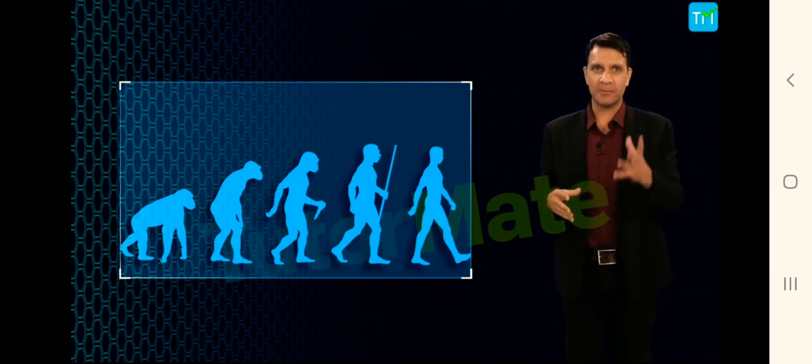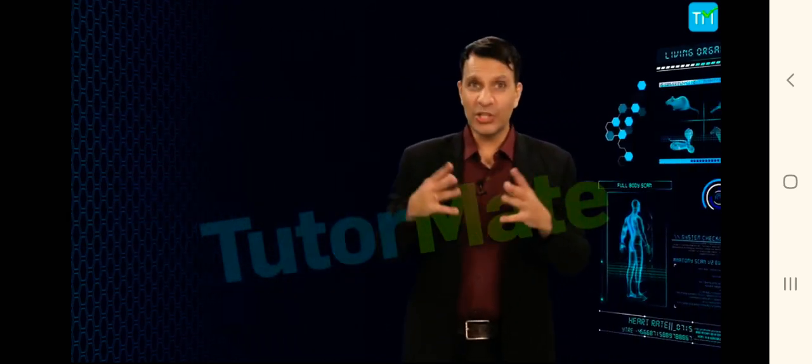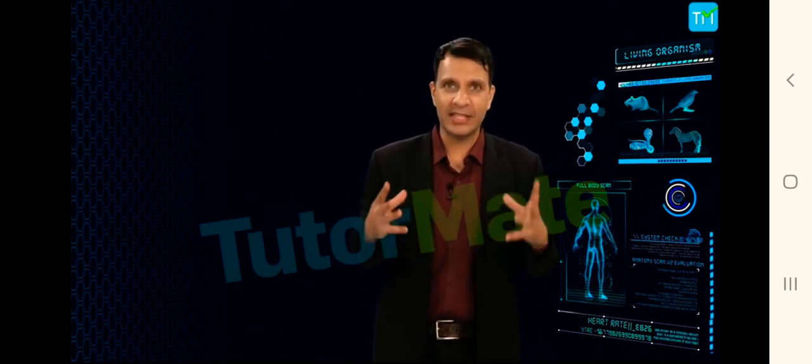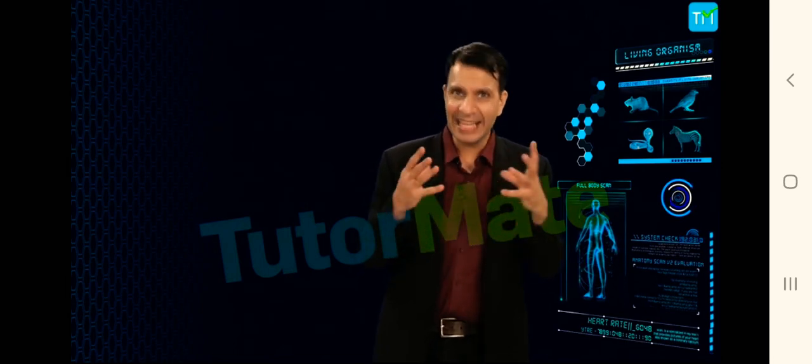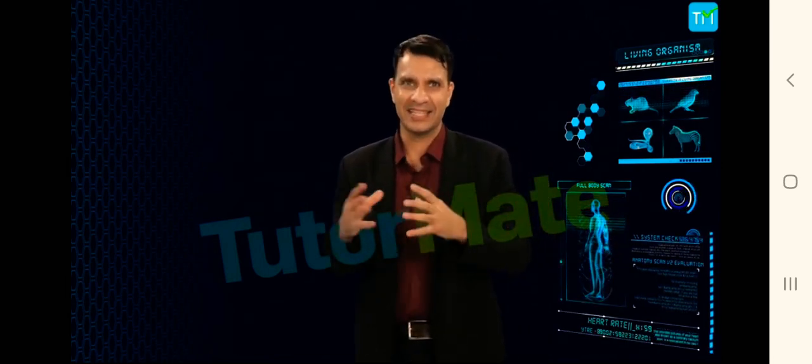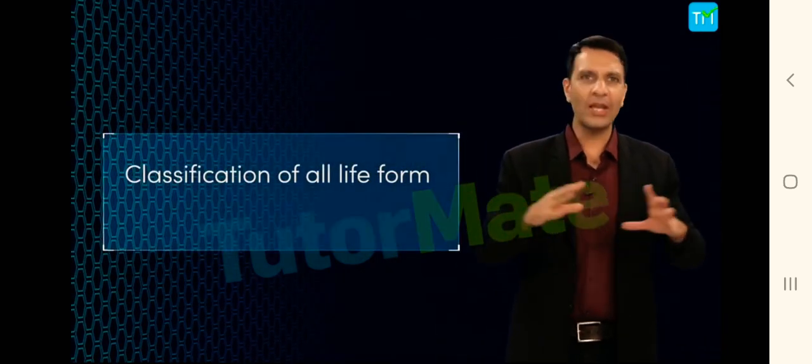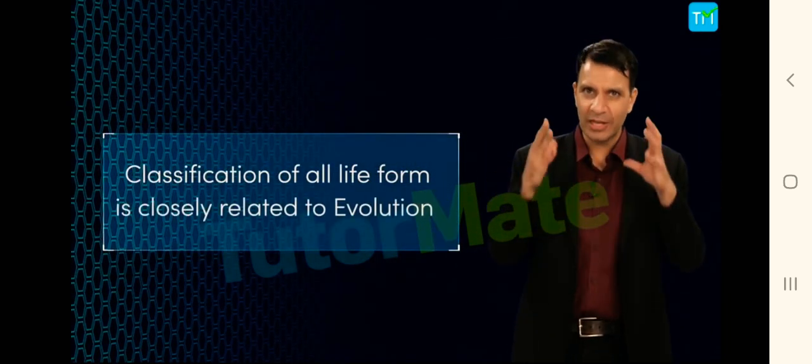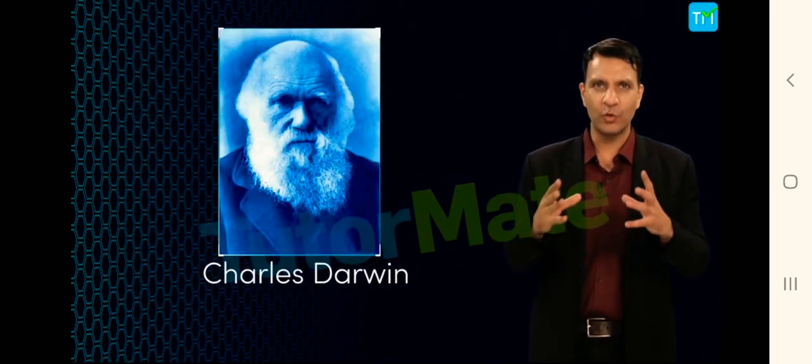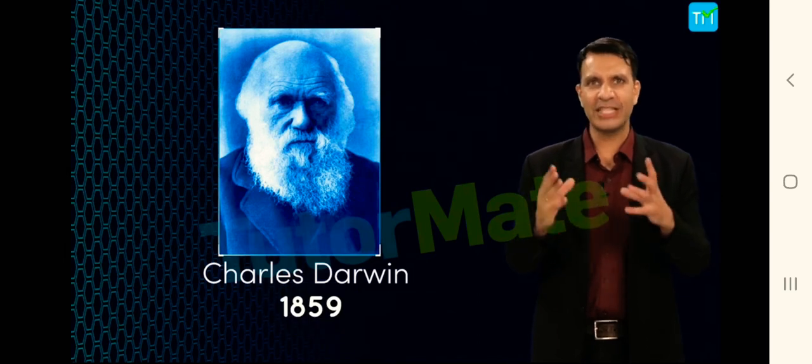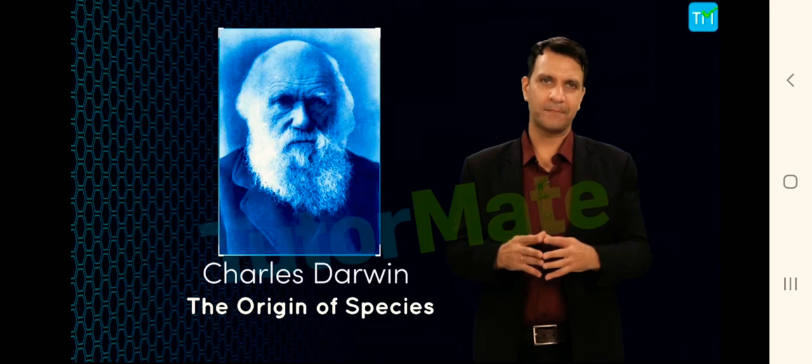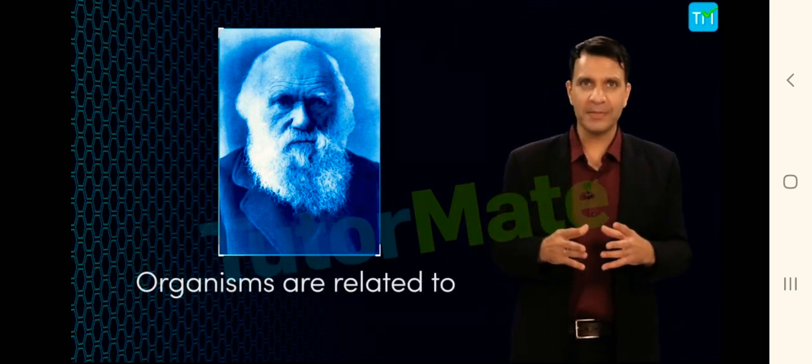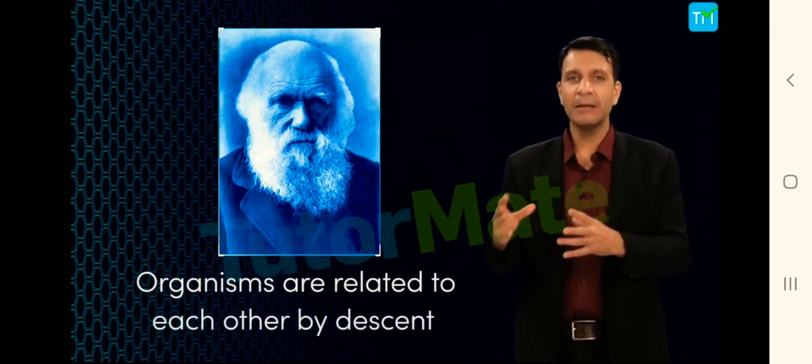That caused the change in other subsequent body design. So this means that the characteristics that came into existence earlier are likely to be the fundamental characteristics than characteristics that came into existence later. The classification of all life forms is closely related to their evolution. Charles Darwin first described the idea of evolution in 1859 in his book The Origin of Species. Darwin suggested that organisms are related to each other by descent.